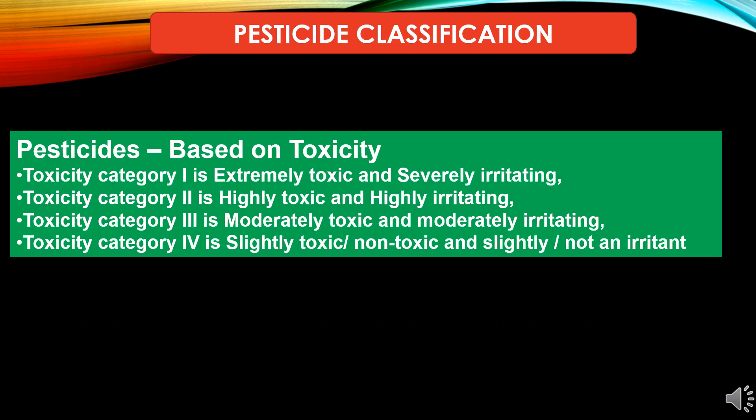Now to study pesticide classification. First, based on toxicity: toxicity category one is extremely toxic and severely irritating; category two is highly toxic and highly irritating; category three is moderately toxic and moderately irritating; and category four is slightly toxic or non-toxic and slightly or non-irritant.